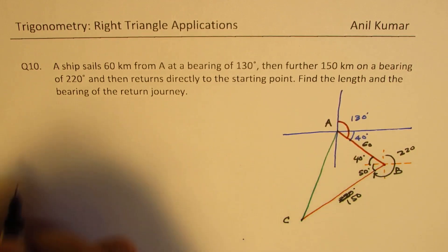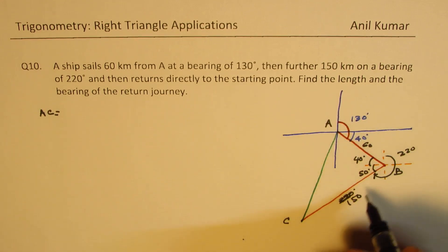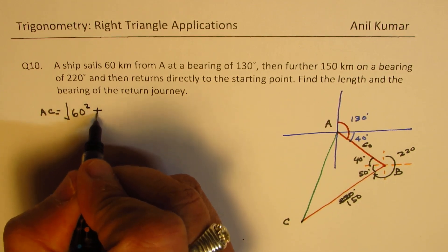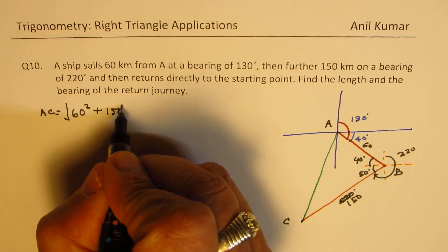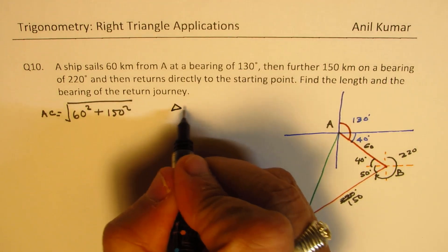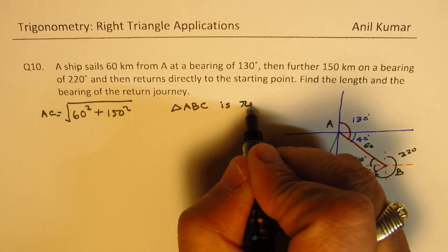So that means A to C basically is, since we have a right triangle, we can find this as square root of 60 square plus 150 square, correct? Since the triangle ABC is right triangle.